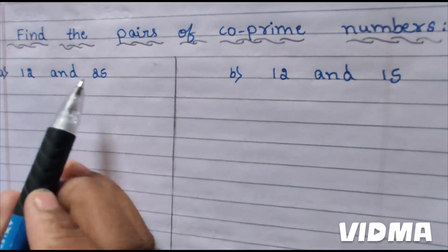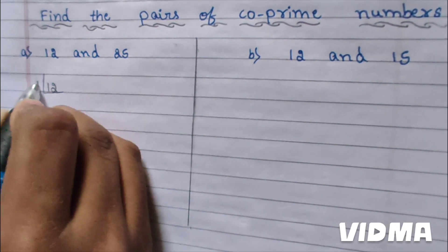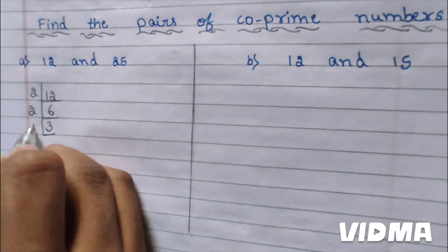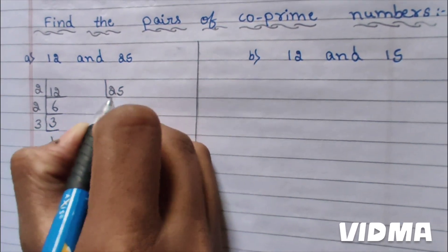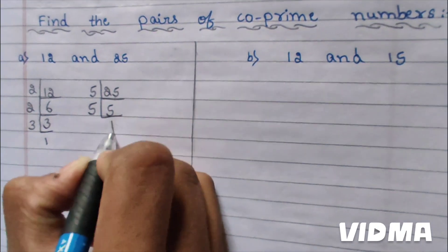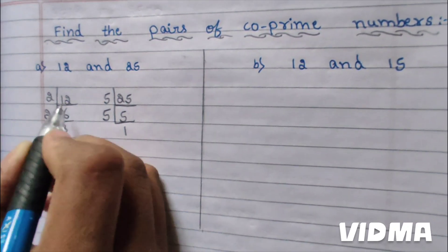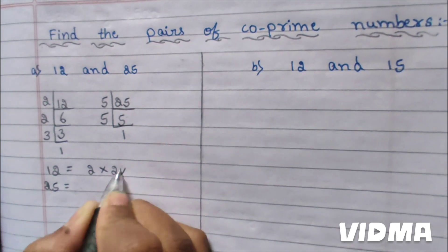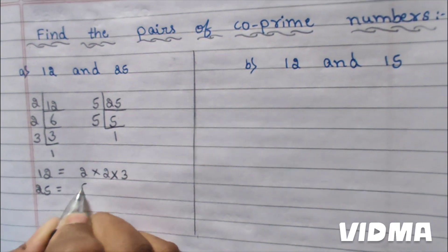First, 12 and 25. We do 12: 2 times 6 is 12, 2 times 3 is 6, 3 times 1 is 3. Next, 25: 5 times 5 is 25, 5 times 1 is 5. So 12 factors as 2 into 2 into 3, and 25 factors as 5 into 5.